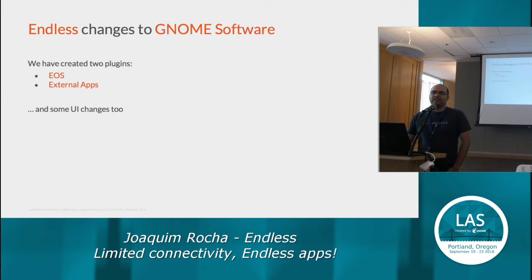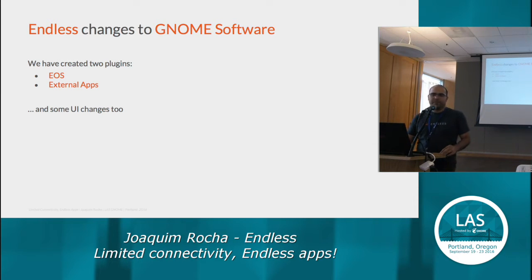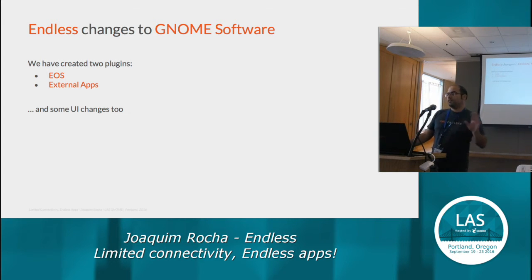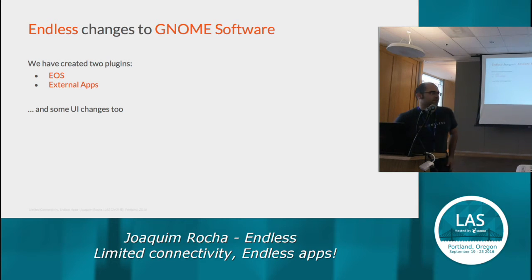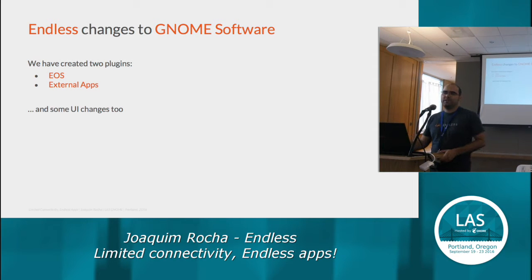GNOME software follows an architecture where it's very highly pluggable — the way you manage applications is through plugins. There's the PackageKit plugin that, if you're running a traditional distro, will get your packages. Then there's the AppStream plugin that provides the description and screenshots. There are many plugins, and we created two for our needs: one called EOS, for everything closely related to our desktop, and another called External Apps.